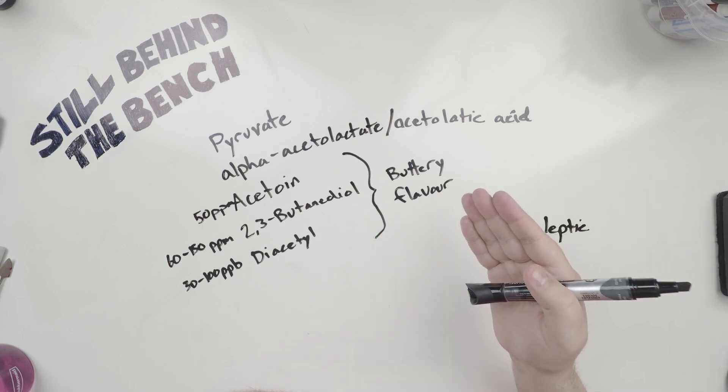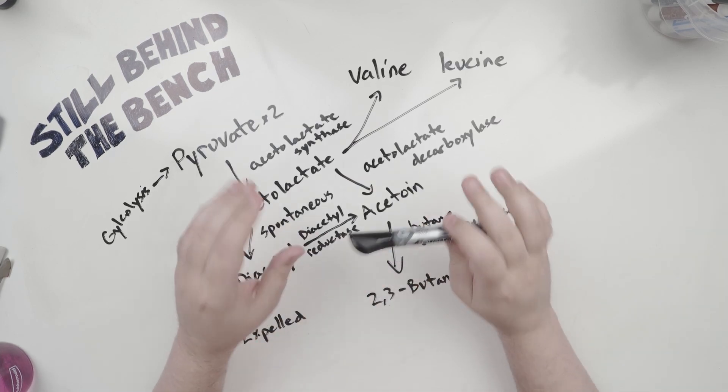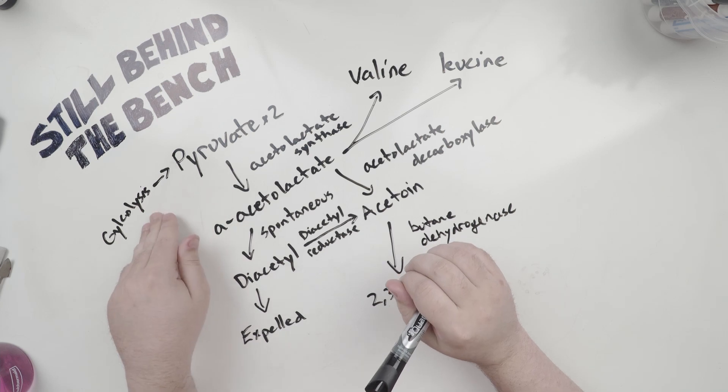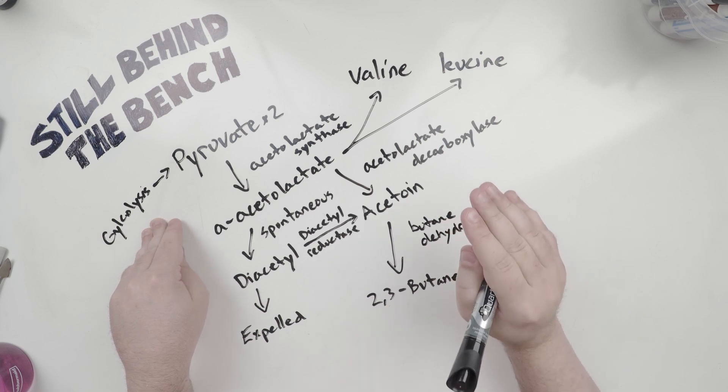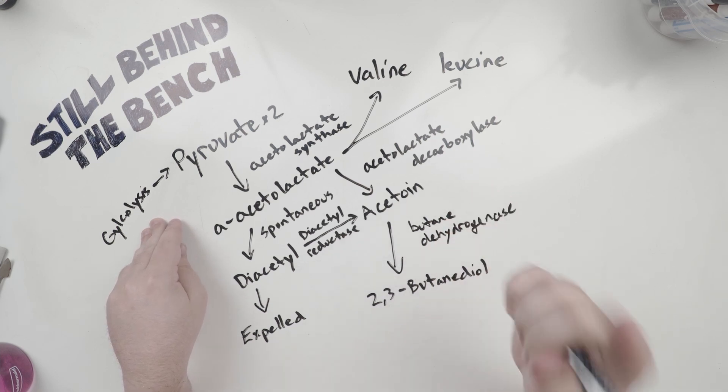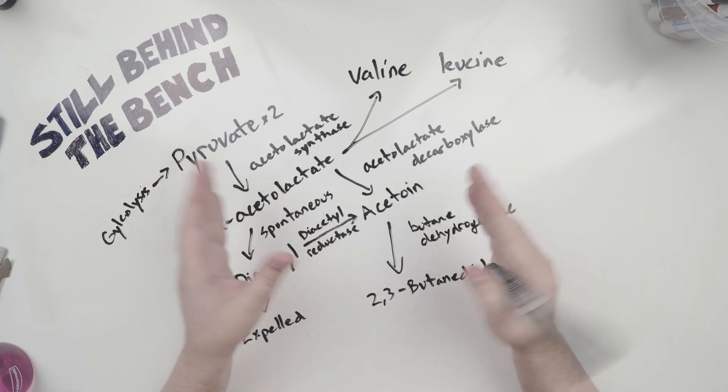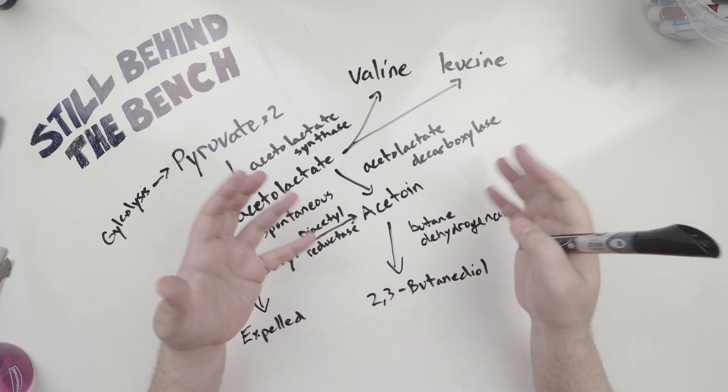So let's get to the nitty-gritty of how diacetyl is actually created. Okay, so pyruvate is the compound that starts this all off. It's produced via the glycolytic pathway, glycolysis. I described that pathway in episode 10, fermentation part 1. I'll link to it in the description and I'll put a card at the top of the video for it. Essentially, you go from whatever source of fermentable sugar you have present in the wort or must, you know, glucose, fructose, maltose, etc.